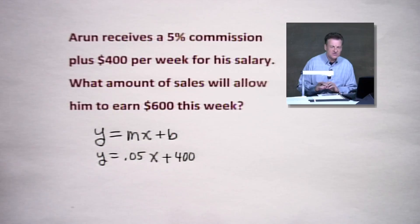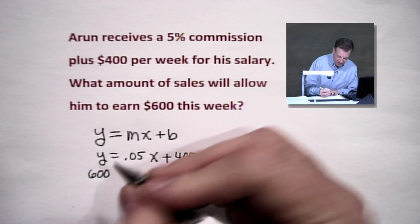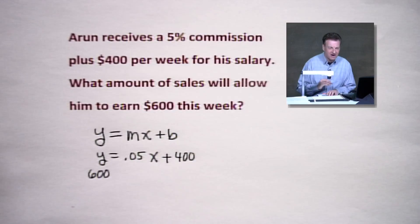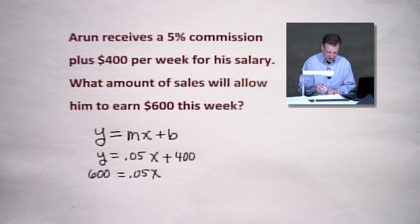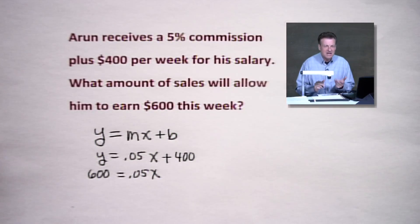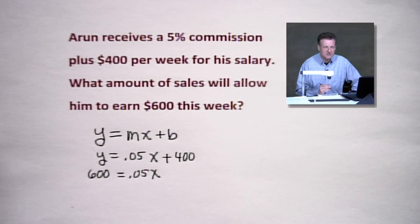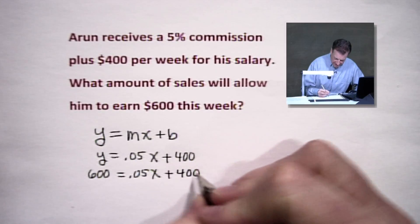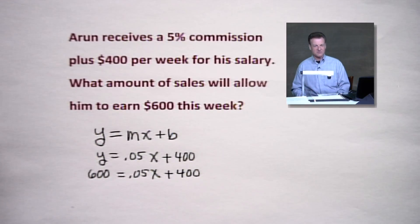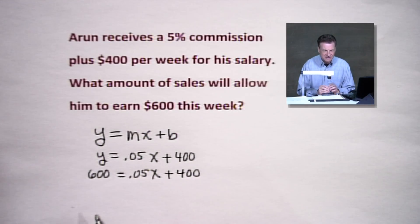He wants to earn $600 this week — that's what he wants to take home, that's our y value. He wants to know how much x — how much in sales — is going to make it work to get $600. He may want more money, but this is his minimum. He has a $400 head start to get him to that $600. So what is x here?